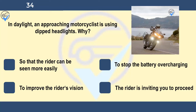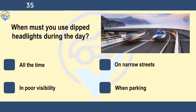In daylight, an approaching motorcyclist is using dipped headlights. Why? So that the rider can be seen more easily, to stop the battery overcharging, to improve the rider's vision, or the rider is inviting you to proceed. A motorcycle can be lost from sight behind another vehicle. The use of headlights helps to make it more conspicuous and therefore more easily seen.